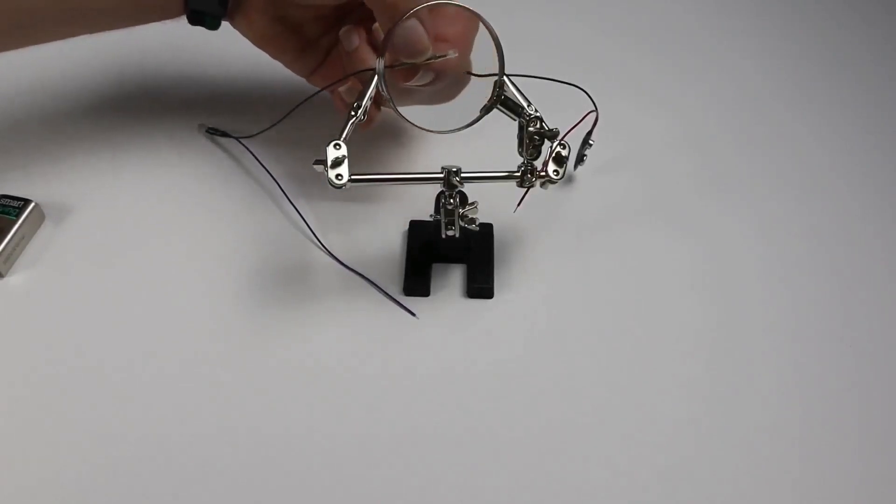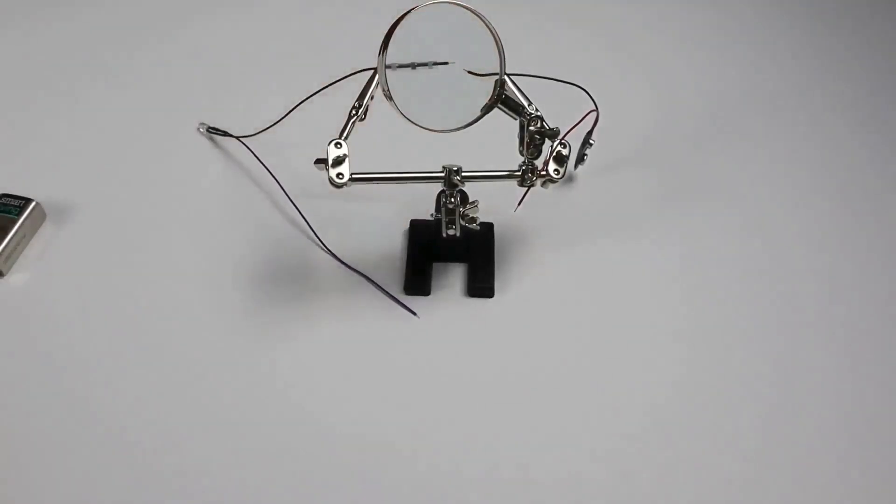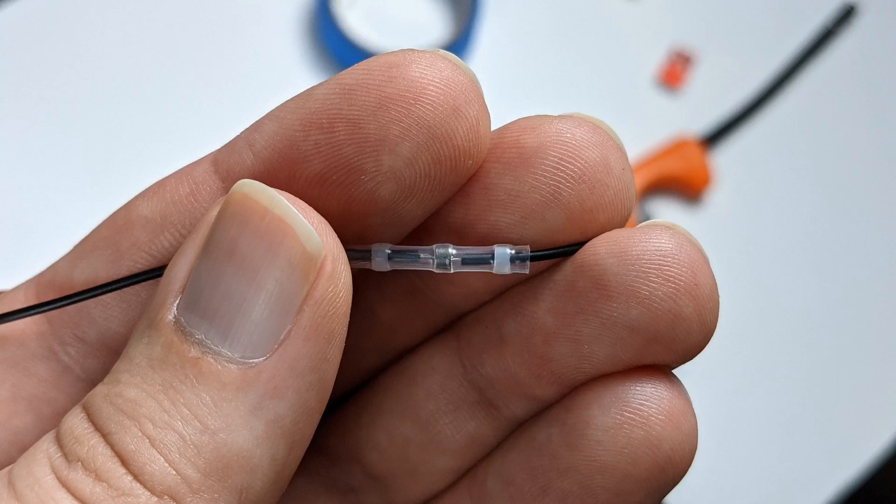So before you put any heat to these connections you want to make sure that they're set up correctly. It's a little hard to see inside that connection but I have the exposed wires overlapping just a little bit inside where that solder is. And then what's going to happen when you put heat to it is that solder is going to melt and become a liquid and it's going to cover those wires making them one tight connection.